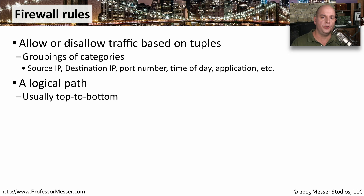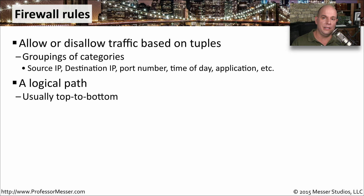The access list in a firewall is usually evaluated from the very top, stepping through the list all the way to the very bottom. As traffic comes into the firewall, that packet is evaluated against the first item in the list. If nothing matches, it goes to the next set, and so on through each access list until it finds one that matches the particular kind of traffic. There is then a disposition that says whether to allow it or disallow it through the firewall.